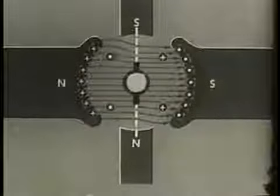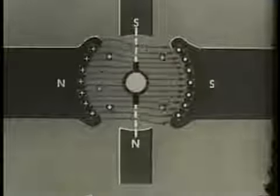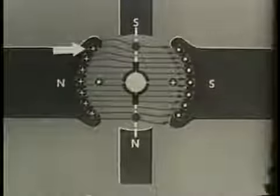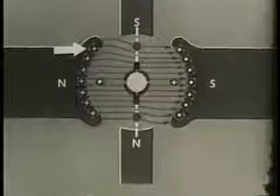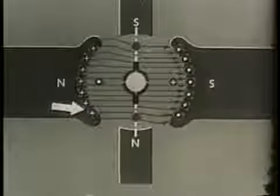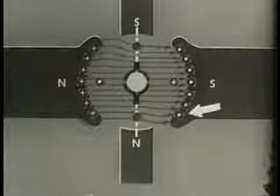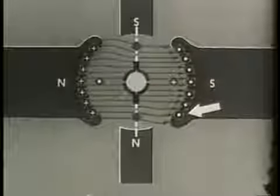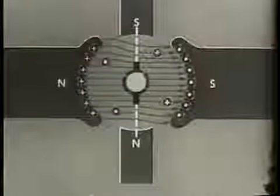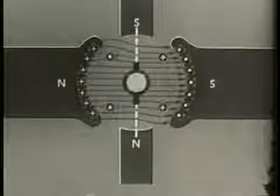In addition, to further counteract armature reaction, windings called compensating windings are sometimes placed in the main pole faces. The current in these windings is armature current flowing in the opposite direction to the current in the armature conductors.